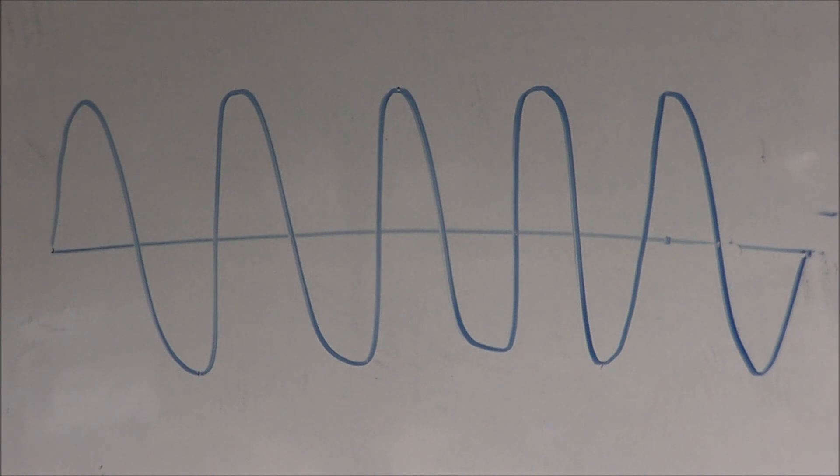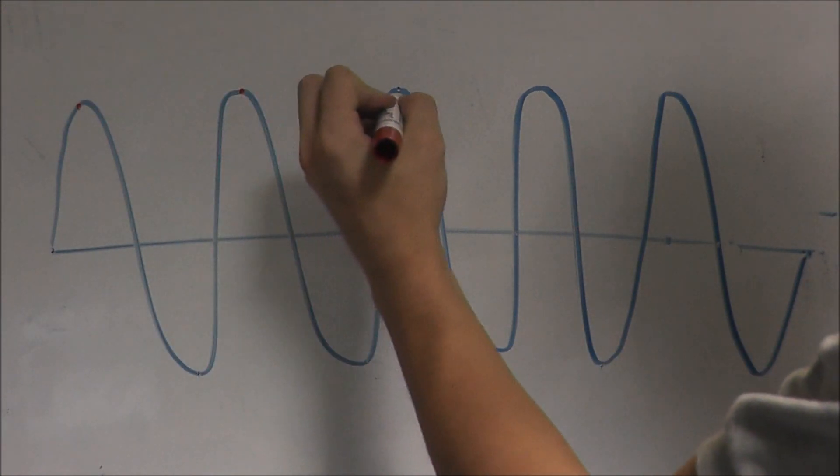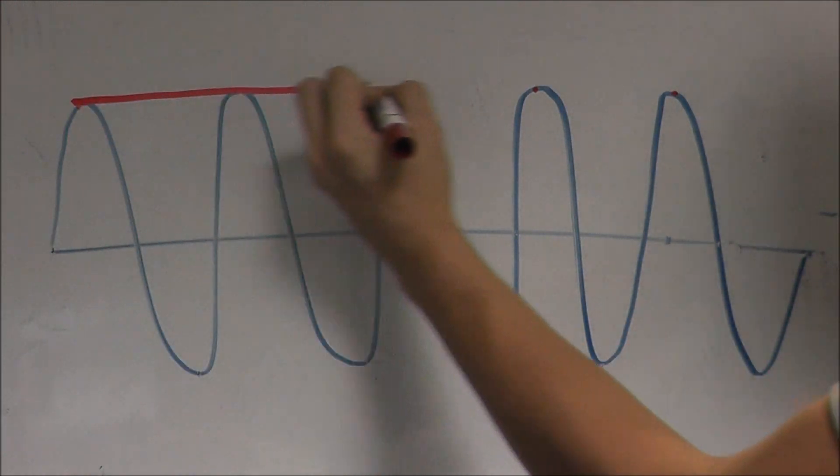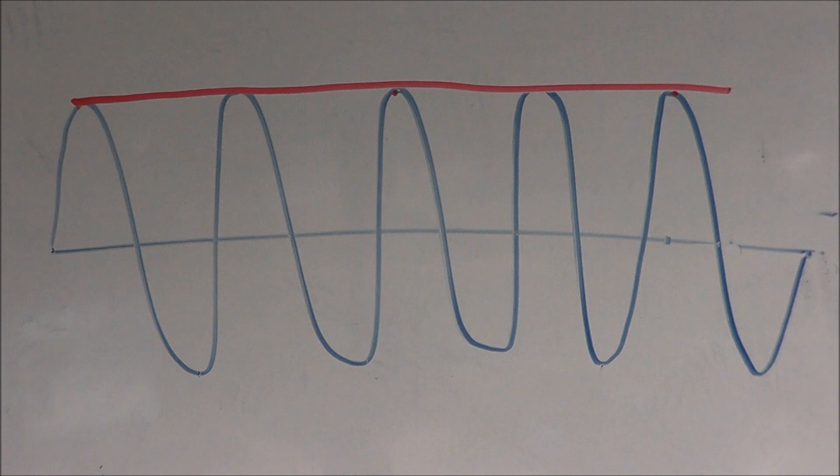What if our scope is sampling at the same rate as the frequency? That is, we get only one sample per period. Well, in that case, we get this straight-line waveform that looks like that of a direct current, which is what we saw earlier on our scope.